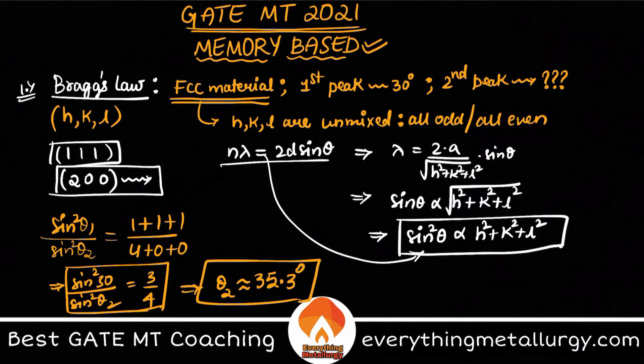From here you get θ₂ on solving approximately about 35.3 degrees. Very simple and very beautiful equation. So if you see from FCC material, how much information we got from FCC. You got the extinction condition or the condition which Bragg's law is satisfying. From there you calculated your HKL values which are 1,1,1, 2,0,0 etcetera.